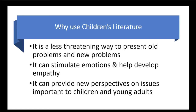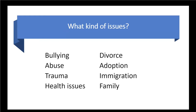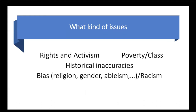What kind of issues are important to children and young adults? Things like bullying, abuse, trauma, health issues, divorce, adoption, immigration, family, rights and activism, poverty, class, historical inaccuracies, bias in terms of religion, gender, ableism, and racism. Because of the limited amount of time I have, I'm going to concentrate on the last two issues of bias and racism.